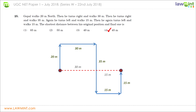Question twenty-five is a geometry-related question best solved by drawing a diagram. Gopal walked 20m north, then turned right and walked 30m, then turned right again and walked 35m, then turned left and walked 15m, and finally turned left and walked another 15m. Looking at the diagram showing Gopal's complete journey, he ends up at a point parallel to his initial position. The shortest distance between the original position and the final one is always a straight line. Drawing this straight line, the distance equals 30m plus 15m, giving 45m. Therefore the correct answer is choice four — 45m.